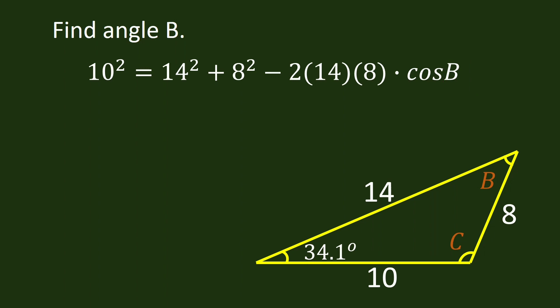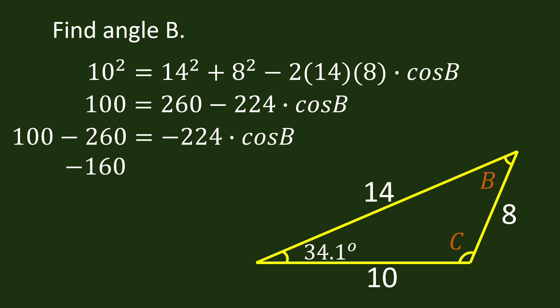Again, we are looking for angle B. 10 squared is 100. 14 squared plus 8 squared is 260. Negative 2 times 14 times 8 is negative 224. Subtract both sides by 260. And we have 100 minus 260 is equal to negative 224 times cosine B. 100 minus 260 is negative 160. Bring down negative 224 cosine B.